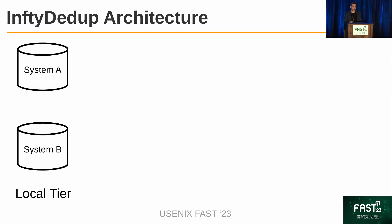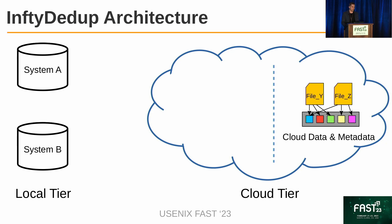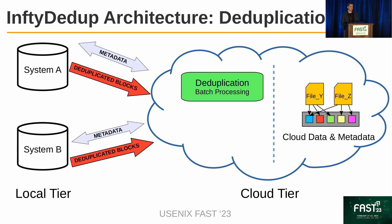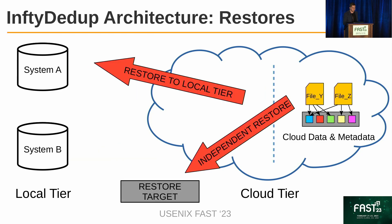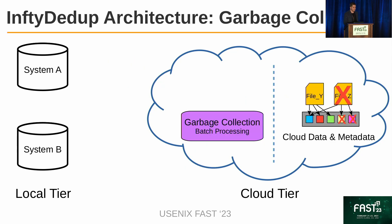Therefore, we designed our system as follows. The local tier can now consist of multiple independent systems. The cloud tier keeps deduplicated data and metadata of files. The important difference is that we perform deduplication as batch processing in the cloud — we only need to transfer some metadata between the local tier and the cloud tier, then upload only deduplicated blocks. After putting data in the cloud, we can restore it to the local tier without downloading data already available there, or do an independent restore elsewhere. To remove data from the cloud, garbage collection is conducted in the cloud to find blocks no longer referenced by any files.